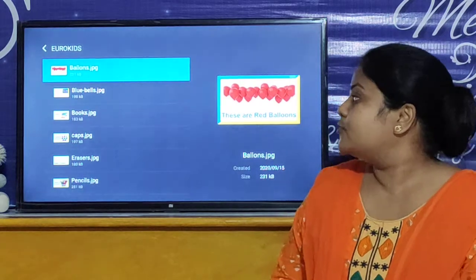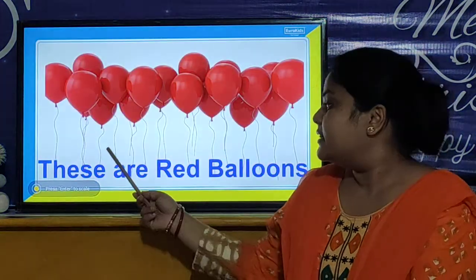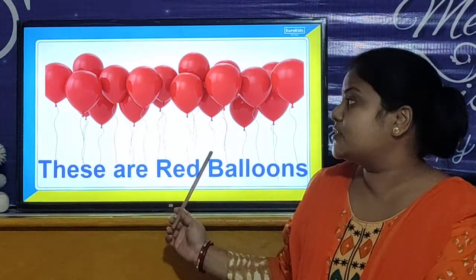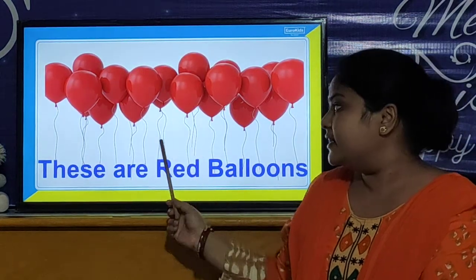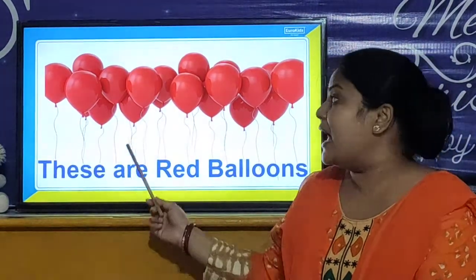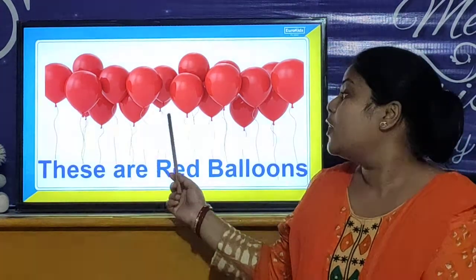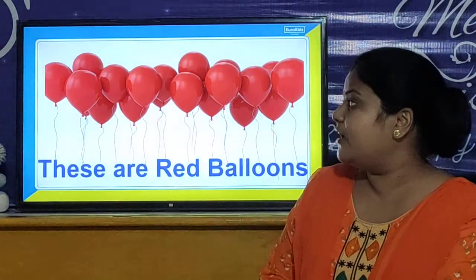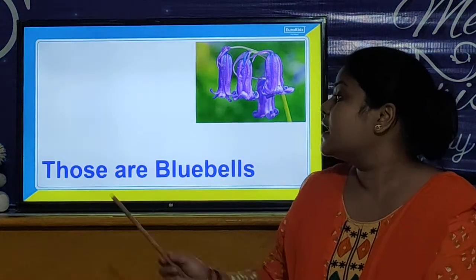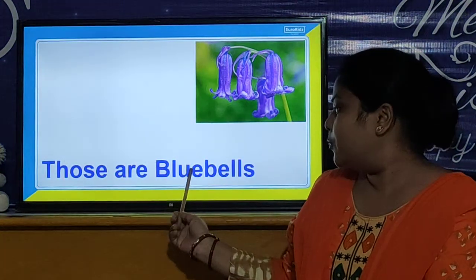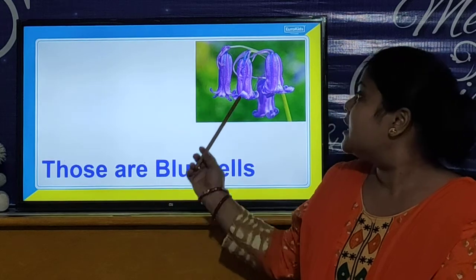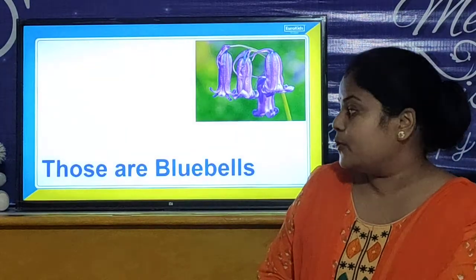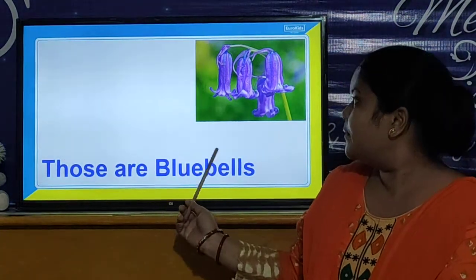Our first sentence is: 'These are red balloons.' The balloons are near, so we will use 'these.' And there are more than one balloon, that's why we use 'these are red balloons.' Our next sentence is: 'Those are blue bells.' These blue bells are far, so that's why we will use 'those.' Those are blue bells.